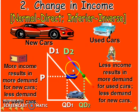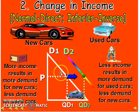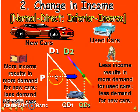For inferior goods, when income increases, the demand curve is affected negatively — the demand curve shifts backward. As stated in the definition of inferior goods, when the consumer's income increases, the consumer buys less of that product, while price still remains the same.